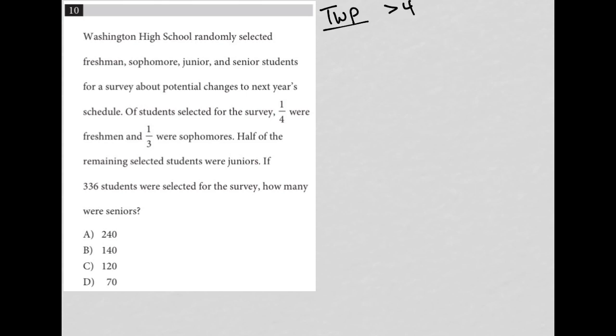So this question says Washington High School randomly selected freshmen, sophomores, juniors and senior students for a survey about potential changes to next year's schedule. Alright, makes complete sense. The next sentence says of students selected for the survey, one fourth were freshmen. Okay, so I'm gonna write this down as quantitative. So freshmen equals one fourth of the students. One third were sophomores. So sophomores equals one third of the students.